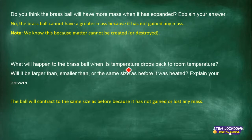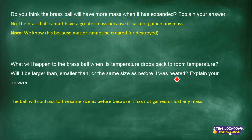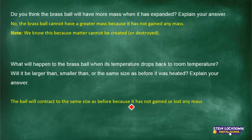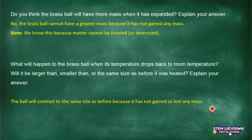What will happen to the brass ball when the temperature drops back to room temperature — will it be larger, smaller, or the same size as before? The ball will contract to the same size as before, because it has not gained or lost any atoms. When it contracts it goes back to its original state.